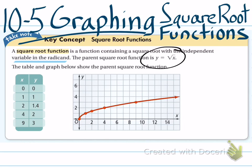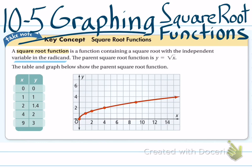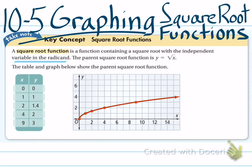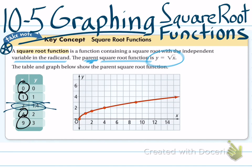Like with any function, when you are going to plot it on a graph, you have to have a table of values, and in that table you have to pick your own x values. When you have your x values and you are taking the square root of them, you want to pick numbers that are perfect squares. That's why you can see 0, 1, 4, and 9 right here — all of those numbers are perfect squares.